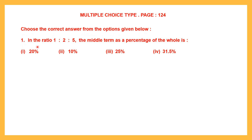Question 1. In the ratio 1 is to 2 is to 5, which is the middle term? The middle term is 2. The middle term as a percentage of the whole is which of these? So the middle term is 2 and they want to know the percentage of the middle term to the whole. First, let's write down the given ratio: 1 is to 2 is to 5.